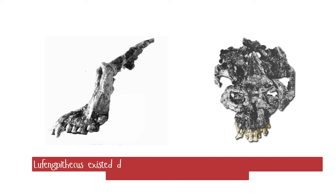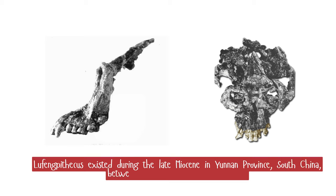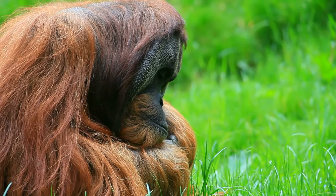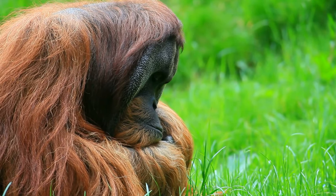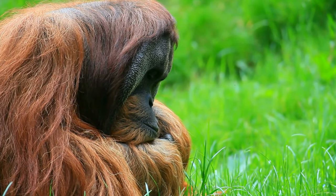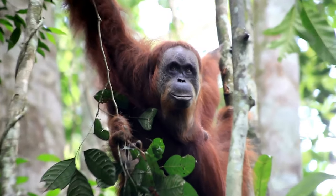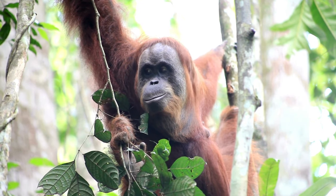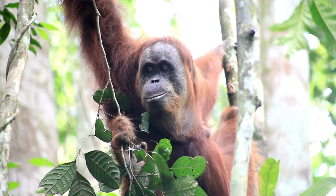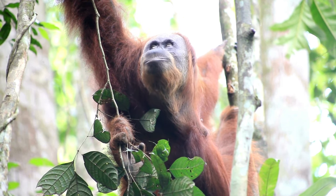Lufengpithecus existed during the late Miocene in Yunnan province, South China, between 12.5 to 6.2 million years ago. These apes exhibited significant sexual dimorphism and were well adapted for climbing in subtropical forests. Their evolutionary relationship with orangutans remains unclear as they show both similarities and unique features.